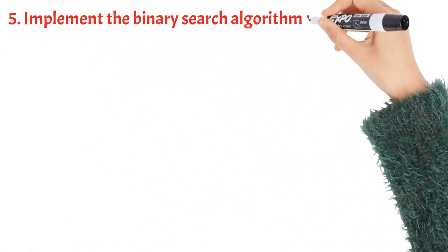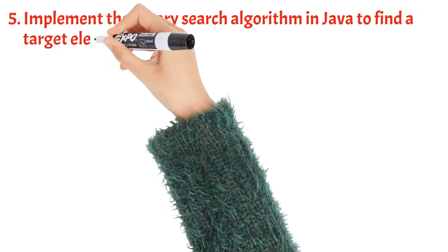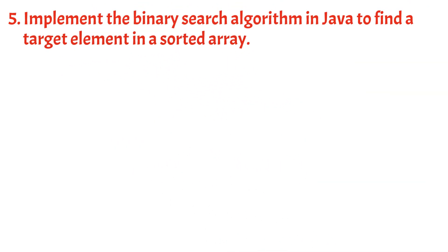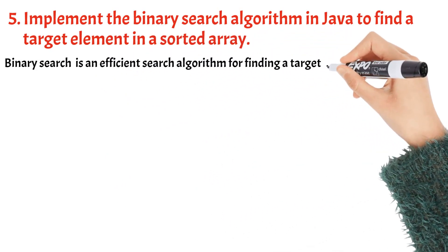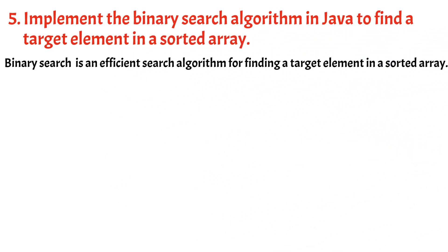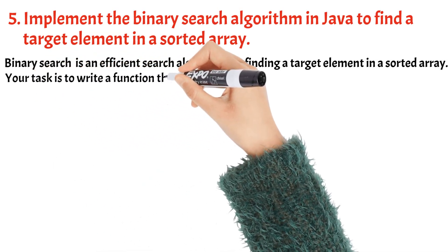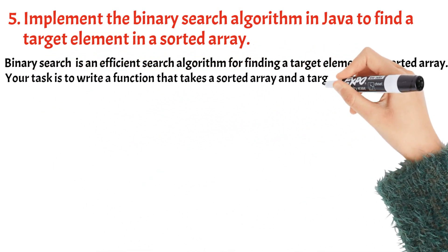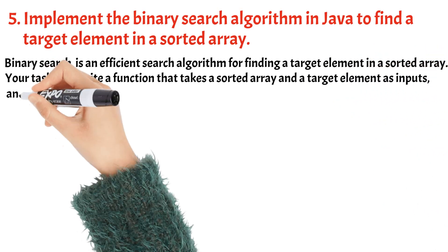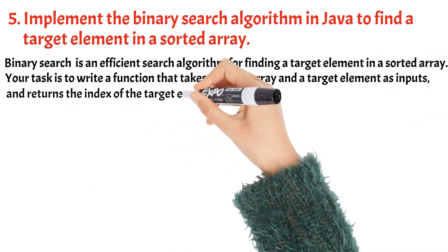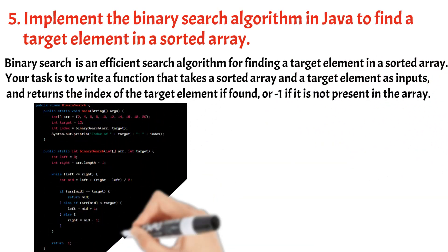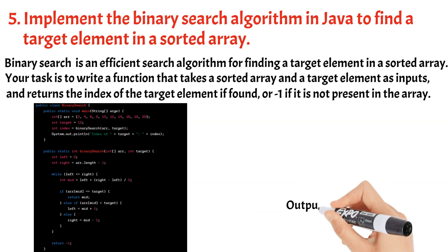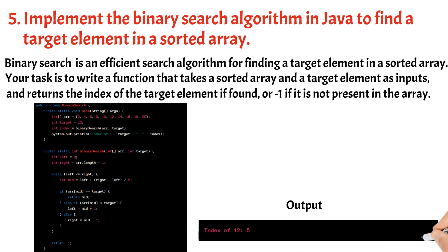Implement the binary search algorithm in Java to find a target element in a sorted array. Binary search is an efficient search algorithm for finding a target element in a sorted array. Your task is to write a function that takes a sorted array and a target element as inputs and returns the index of the target element if found, or -1 if it is not present in the array. In this example, the binarySearch method takes a sorted array and a target element as inputs.